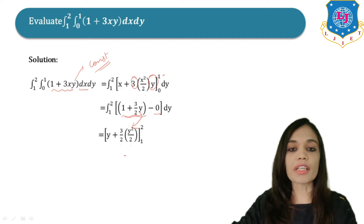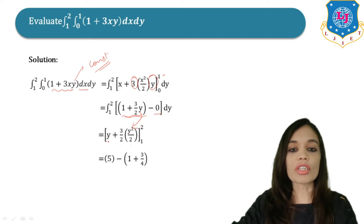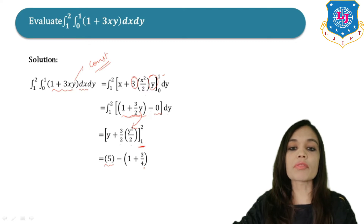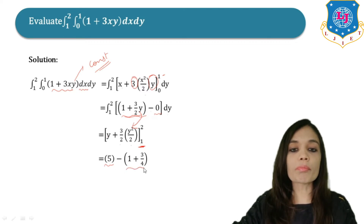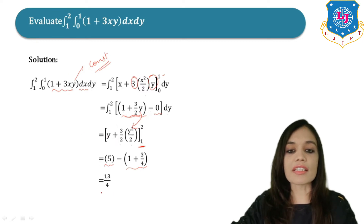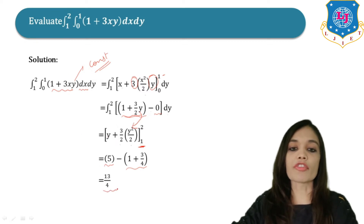Now let us put the upper limit first, that is 2 in place of y — we get the answer as 5. And putting 1 in place of y, we get 1 + 3/4. On simplifying, we get the answer of the double integral as 13/4.